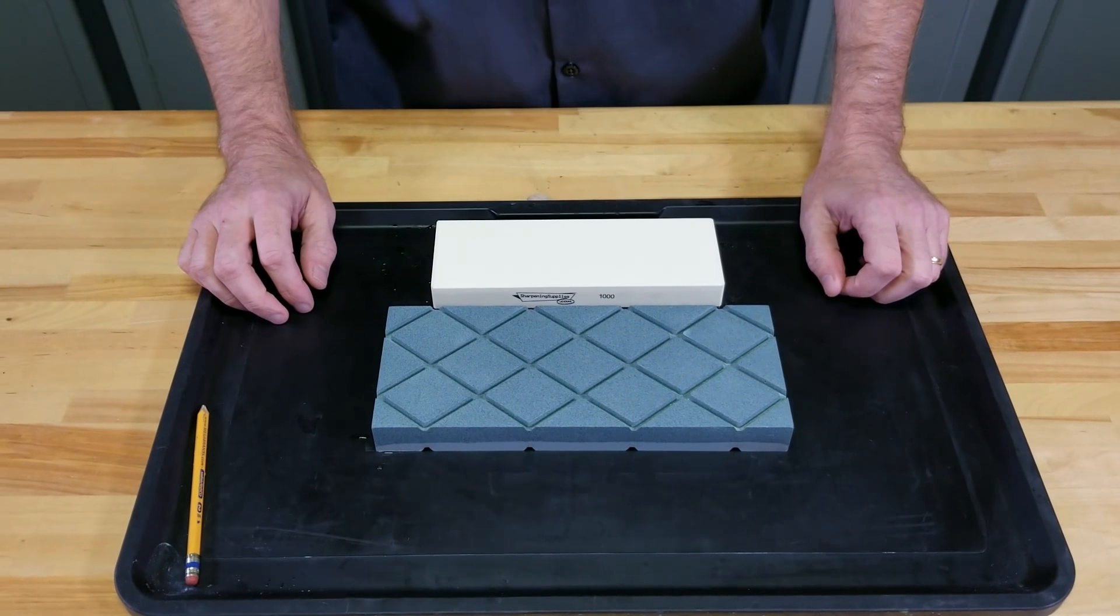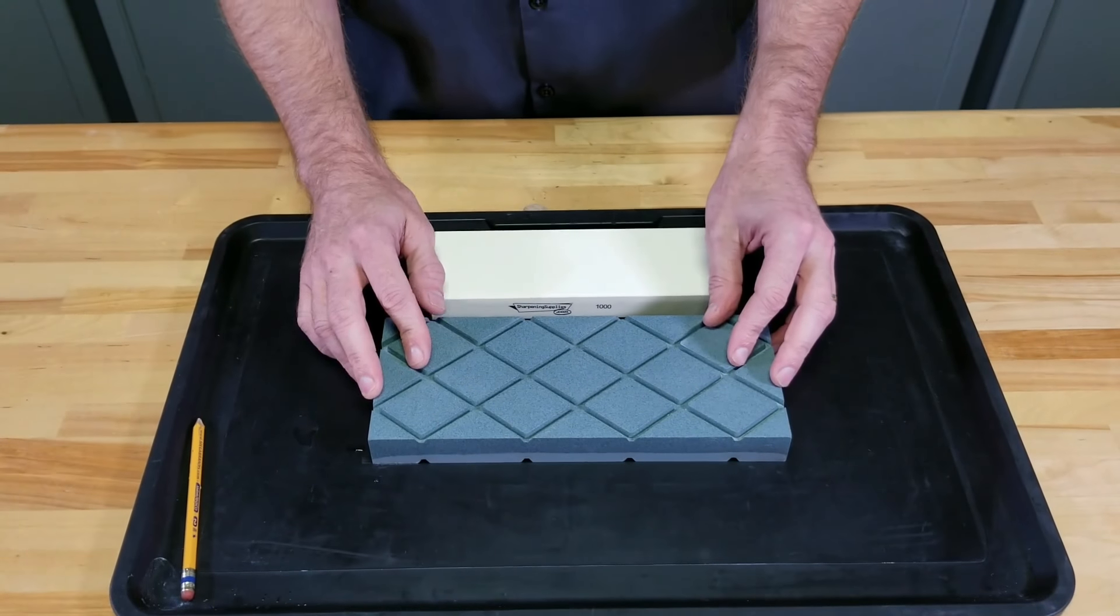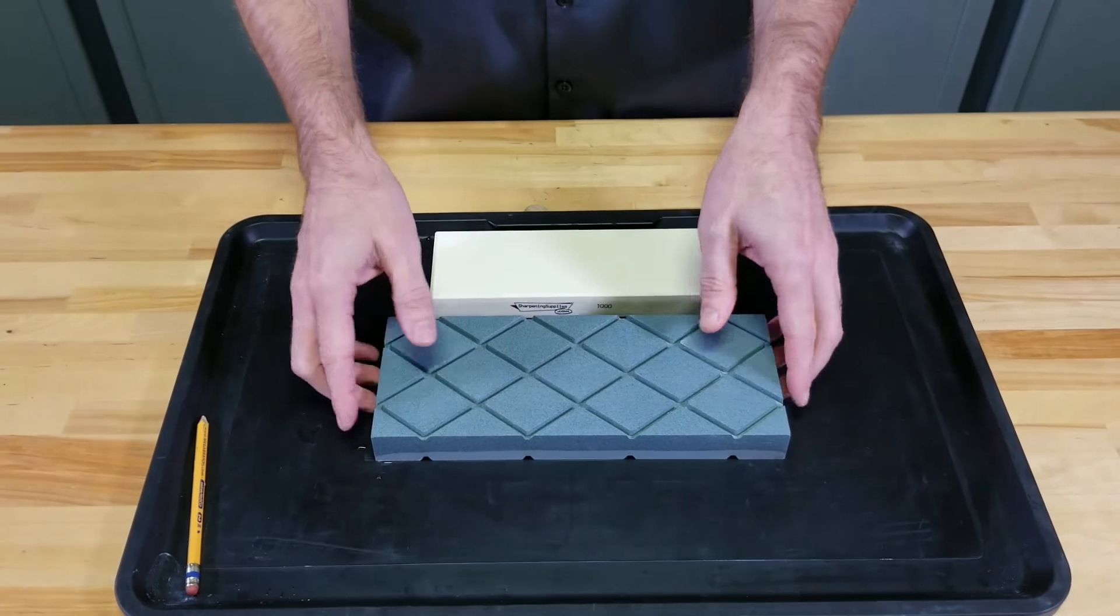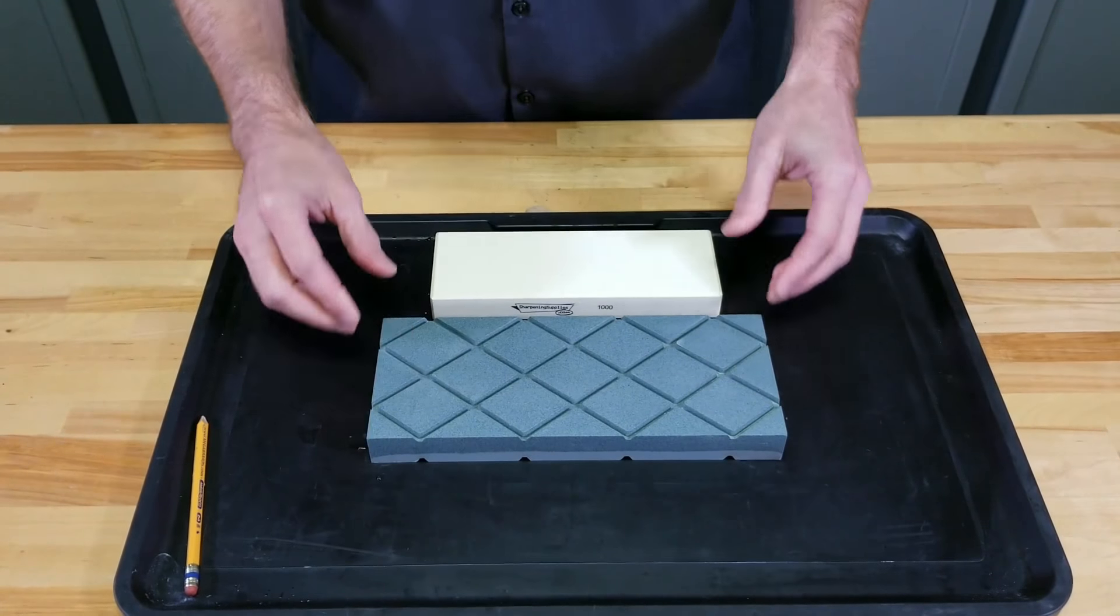Today we're going to flatten a water stone with our new double-time flattening stone. This is a double-sided flattening stone. We have a coarse side here and a fine side on the opposite.